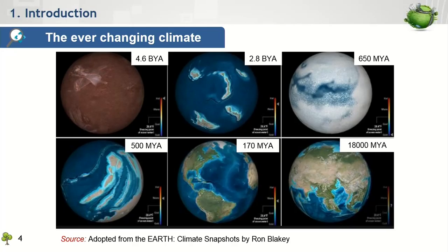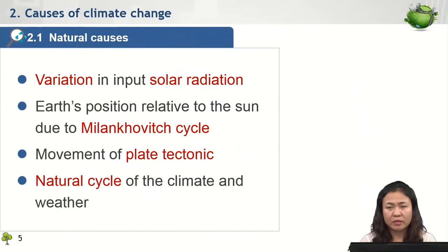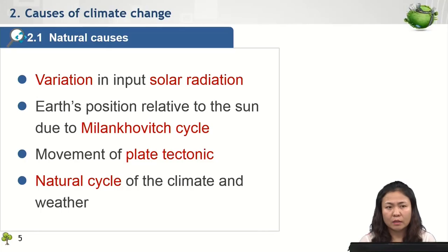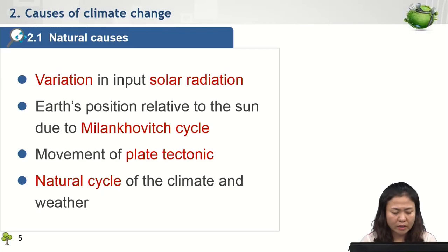From this history, it is obvious that the earth's climate system has been evolving over billions of years. The reasons behind this change are the variation in the climate system component characteristics that happen naturally and also induced by anthropogenic activity in the recent era. The main natural processes that cause change to our climate system include the variation in solar radiation input, the change in earth's position relative to the sun due to the Milankovitch cycle, the movement of plate tectonics, and the natural cycle of the climate and the weather itself.